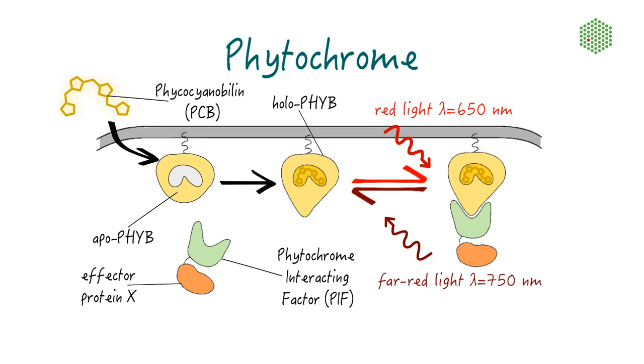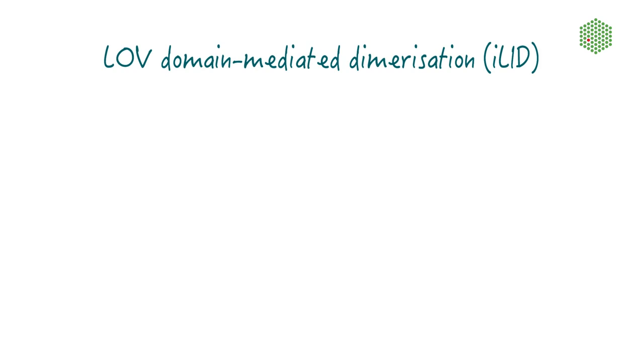HoloPhiB can then be used to recruit fused target proteins to specific sites of the cell and to actively release them again upon far red light illumination. We can also use LOV domains, for example the ILID system, for light-induced dimerization.